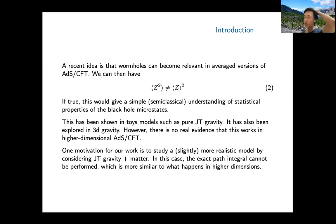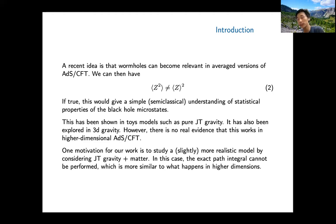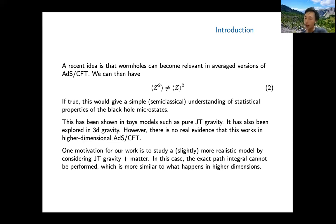One motivation for our work is to study a slightly more realistic version: JT gravity with matter, instead of pure JT gravity. This is more realistic because you cannot do the full path integral analytically as in pure JT; you have to write it as a sum of saddle points, which is also what we expect in higher dimensions. For matter, we take a massless scalar field, though in principle you could study more general matter fields.